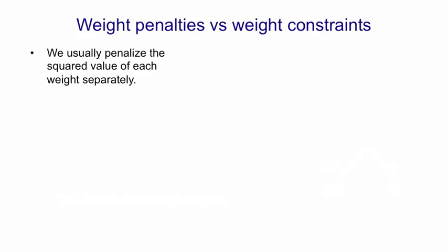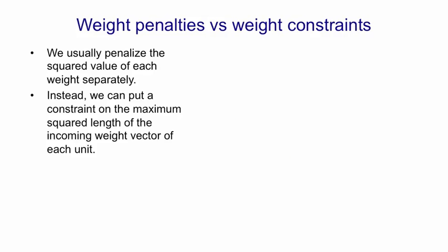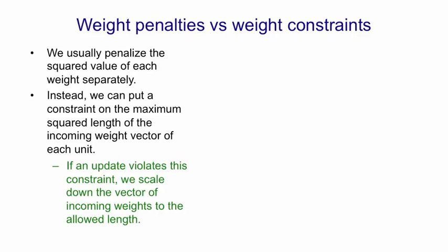Instead of putting penalties on the weights we could actually use weight constraints. What I mean by that is instead of penalizing the squared value of each weight separately we put a constraint on the maximum squared length of the incoming weight vector of each hidden unit or output unit. When we update the weights, if the length of that incoming vector gets longer than allowed by the constraint we simply scale the vector down by dividing all the weights by the same amount until its length fits the allowed length.